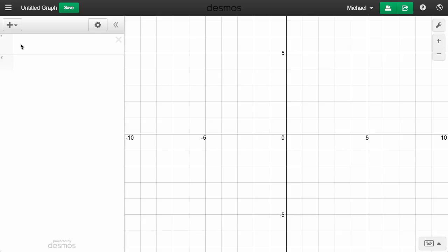Welcome to a quick video tutorial on graphing polar equations in Desmos. Let's start with a circle. Simply state the radius, like r equals 3.